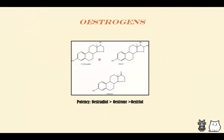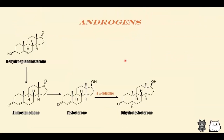In estrogens, we have three main ones: estradiol, estriol, and estrone. Estradiol is the most potent, then estrone, then estriol. For androgens, which are more important for this lecture: dehydroepiandrosterone is converted to androstenedione, which is then converted to testosterone, and then testosterone is converted to dihydrotestosterone. This conversion of testosterone to dihydrotestosterone takes place in the presence of the enzyme 5-alpha reductase. Remember this enzyme — dihydrotestosterone is the most potent out of all the androgens.